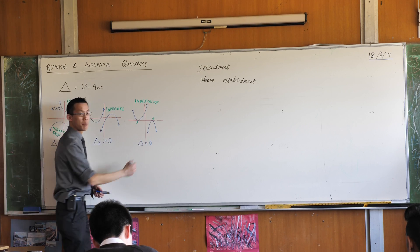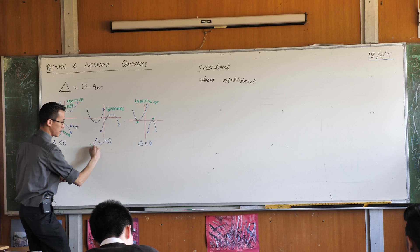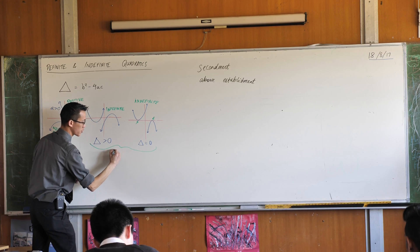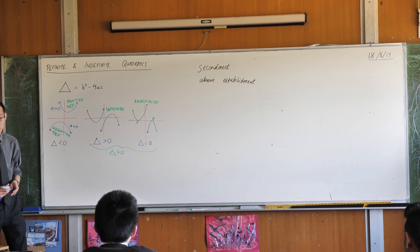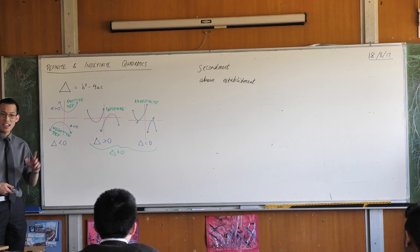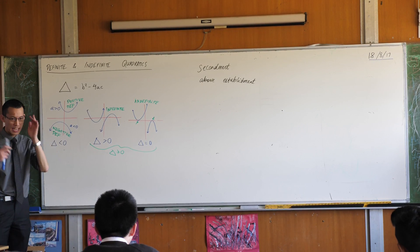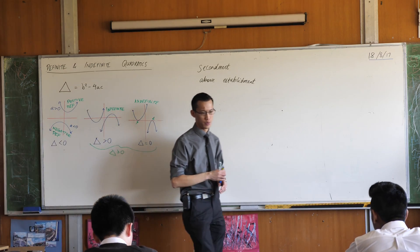So we could combine both of these together and say if the discriminant is greater than or equal to zero, you have an indefinite quadratic. You need a negative discriminant to definitely have all positives or all negative values.